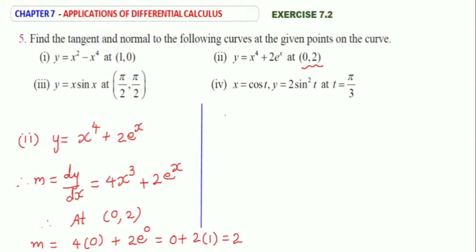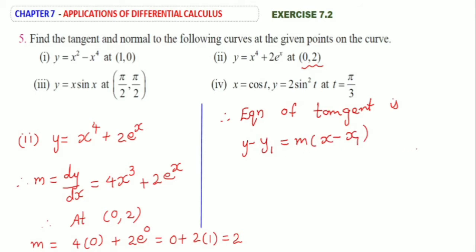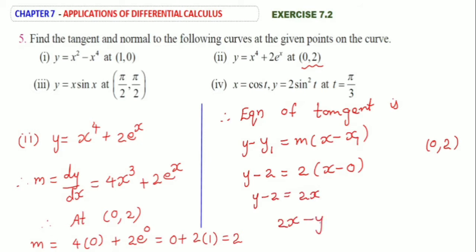Now we can find the equation of tangent. Therefore, equation of tangent is y minus y1 is equal to m into x minus x1. The point is (0, 2). This implies y minus 2 is equal to slope m is 2 into x minus 0. Therefore y minus 2 is equal to 2x. This implies 2x minus y plus 2 equal to 0. This is the equation of tangent.